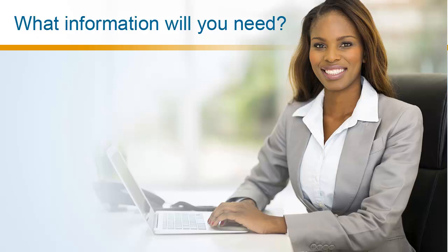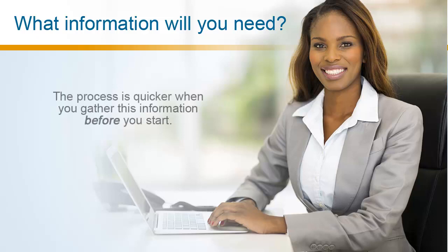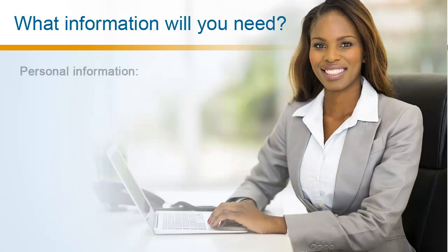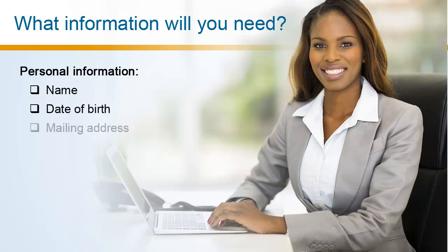Let's begin with what you need to complete your unemployment application. The process is quicker when you gather this information before you start. We ask for personal information including your name, date of birth, mailing address, and social security number.